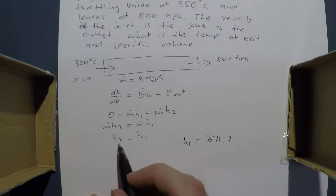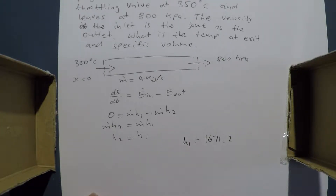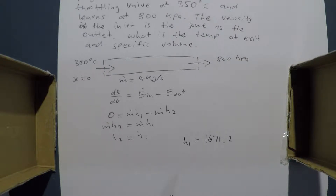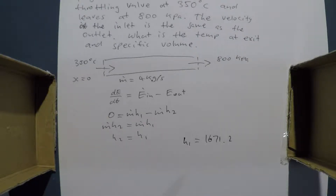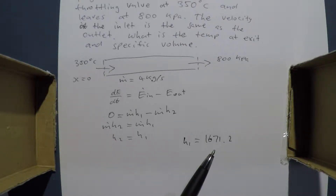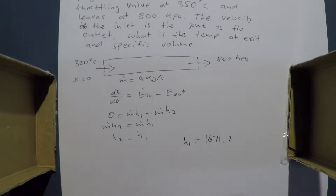Since H2 equals H1, we look up 800 kilopascals in our data tables and check the range in the enthalpy section. H1 equals 1671.2, and checking the range, that value falls within it. Therefore, the exit state is a saturated mixture.